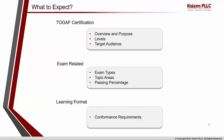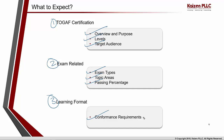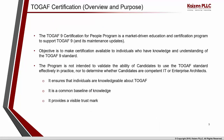What you can expect from today's session: we'll start with the TOGAF certification overview — its main purpose, the different certification levels, and the target audience. Then we'll cover exam-related information including types of exams, topic areas, and passing percentages. Finally, we'll look at the learning format — what TOGAF's conformance requirements provide and an approach to reading the material, including some key ways of reading it.